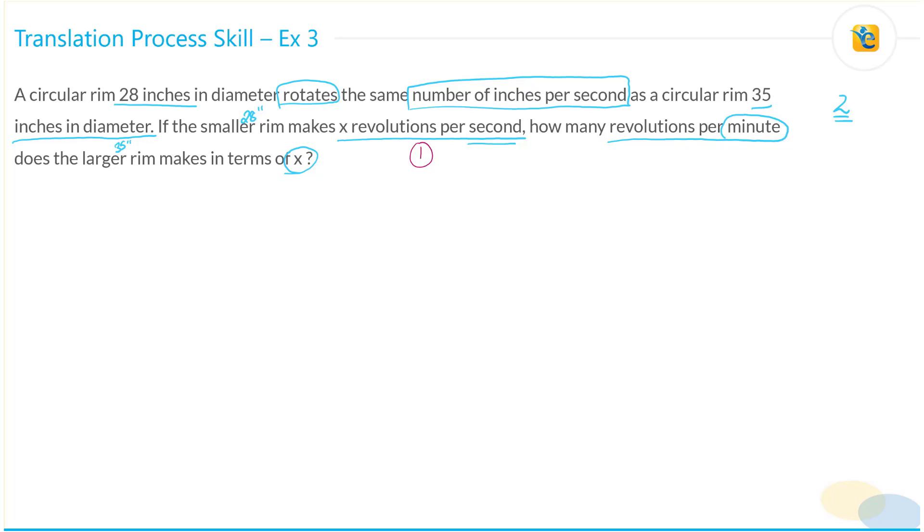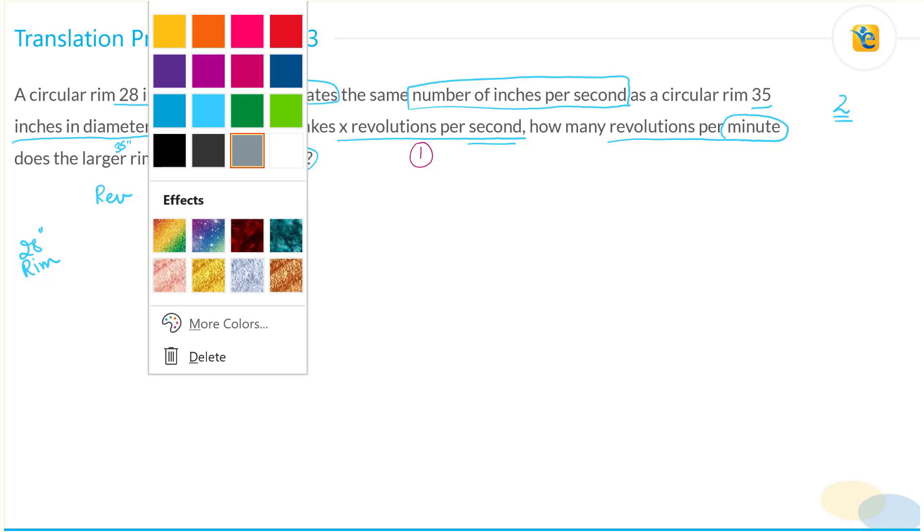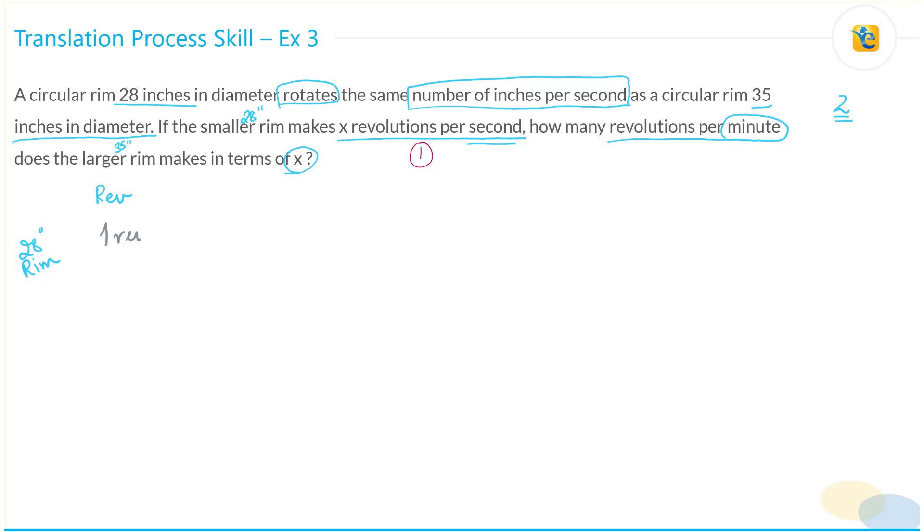What we've been given is revolution. So what is one revolution? We're going to write that down for this 28 inch rim. One revolution covers one circumference in inches. This is the revolution, this is the inches. One circumference. Just to be clear, because units are really important here.